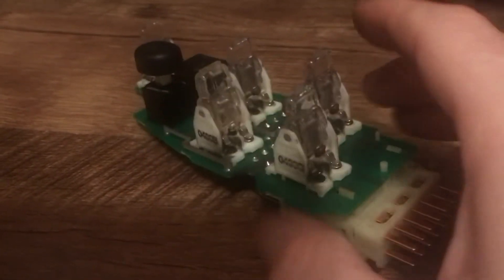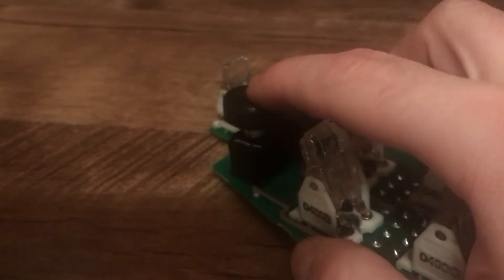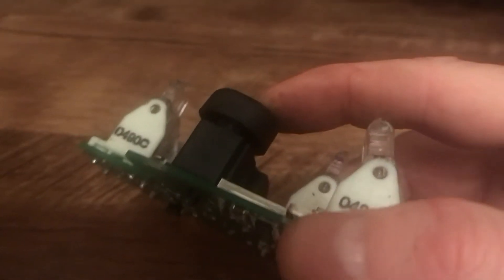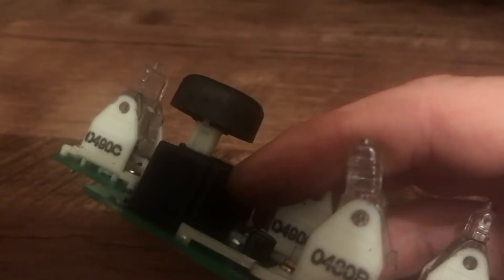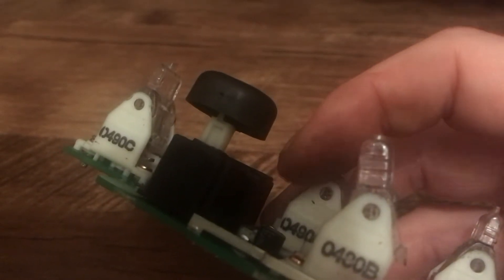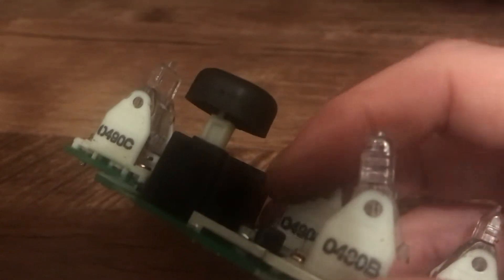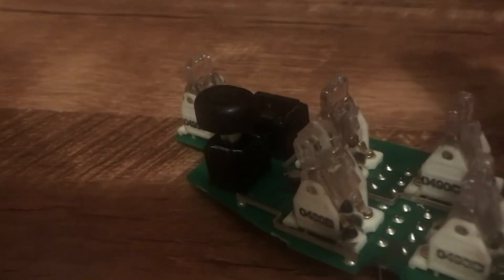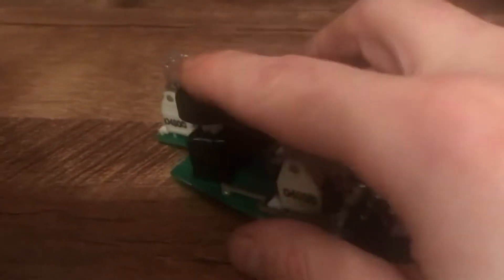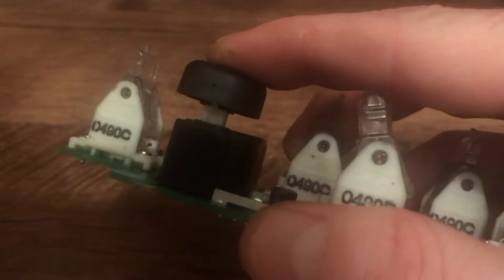Now a lot of times what happens is your lock switch gets dirty and won't release. It breaks the contact actually to make it locked. Sometimes it gets dirty and won't come all the way up to allow contact. Let me pull this open so we can get a peek inside.